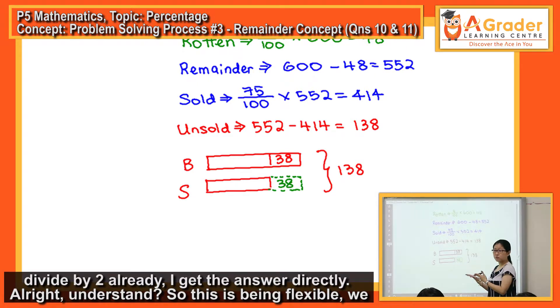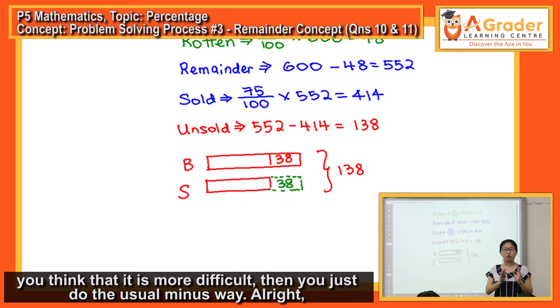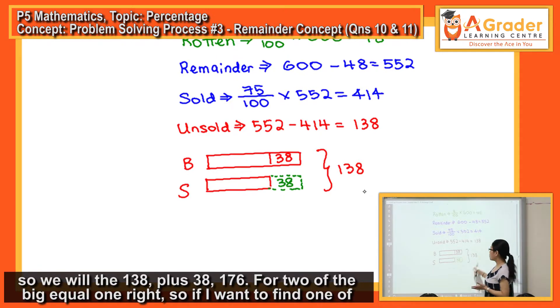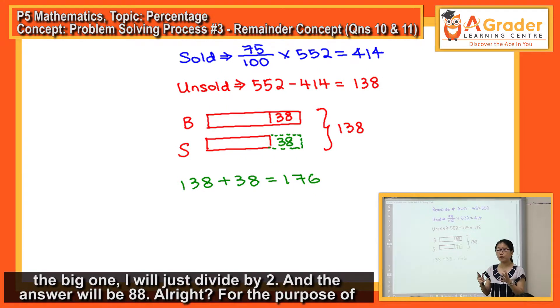So this is being flexible. We can do the minus way or we can do the plus way. But if you cannot understand by the plus way or you think that it's more difficult, then you just do the usual minus way. So we will take the 138 plus 38, equals 176 for two of the big equal one. So if I want to find one of the big one, I will just divide by two, and the answer will be 88.